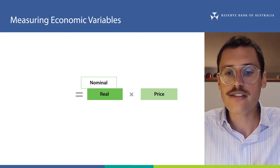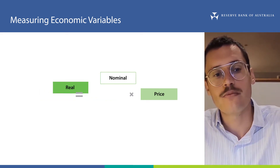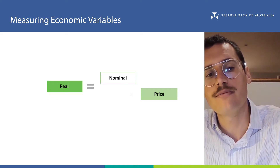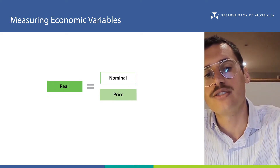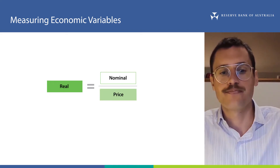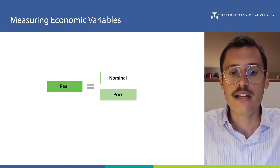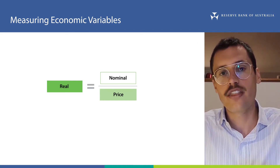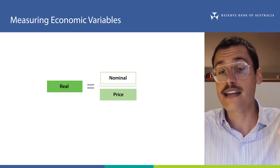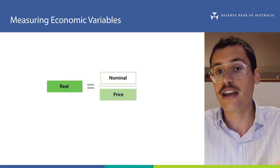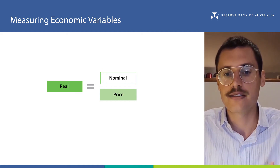Or, a nominal measure equals the real measure times the price. If we rearrange this relationship, we get that a real measure equals a nominal measure divided by its price. This means you can think of a real measure as the nominal measure that takes out the effect of prices.